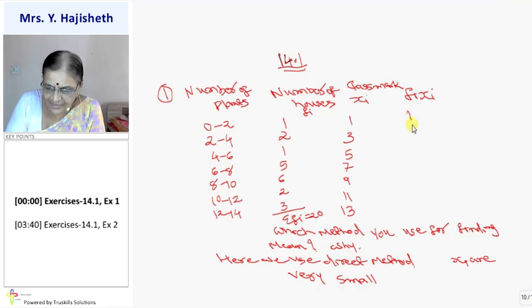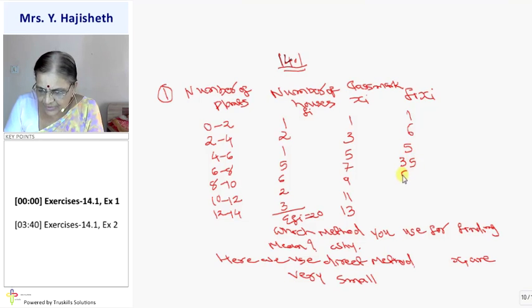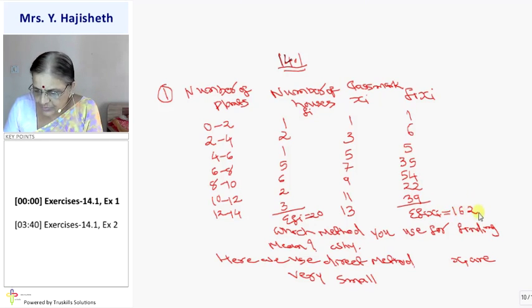What is FI XI? 1 into 1, 1. 3 into 2, 6. 5 into 1, 5. 7 into 5, 35. Then 54. Then 22. Then 39. And total of sigma FI XI will be, add karo, 162 ayega.